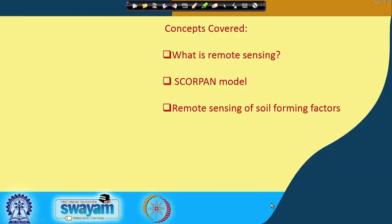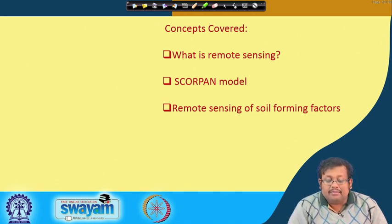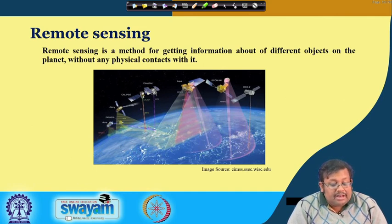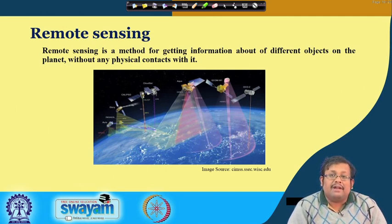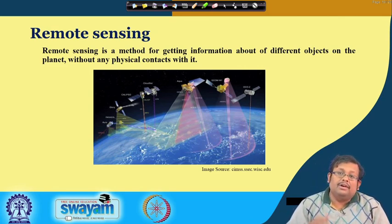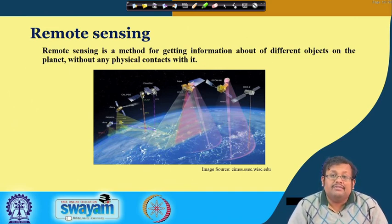We will be covering the following concepts: first, what is remote sensing; then what is the SCORPAN model; and then we will be talking about remote sensing of soil forming factors. Remote sensing is a method for getting information about different objects on the planet without any physical contact with it. It can be done from satellite platforms, from low altitude flights or aerial imagery, or through drones. We will be mostly focusing on satellite-based remote sensing.